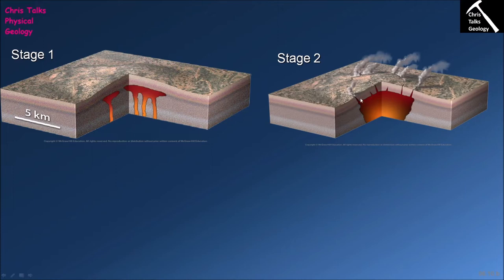By stage two, a substantial felsic magma chamber has built up and we can see the formation of joints and faults associated with the domed and overstressed rock above it. Naturally, the magma begins to rise up along these joints and faults and starts to be extruded onto the surface of the earth.